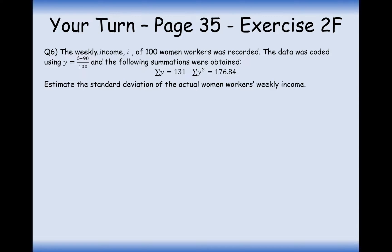Okay, very good. Well done for having a go at this question here. So the weekly income I of 100 women workers is recorded. You'd hope it would be the same as the male workers. But anyway, the data was coded using Y equals I minus 90 divided by 100, and the following summations were obtained. The sum of the Y values is 131. The sum of the Y squared was 176.84. Estimate the standard deviation of the actual women workers' weekly income.